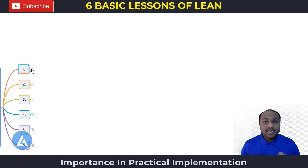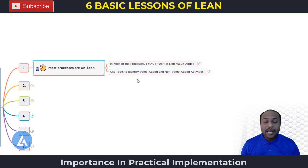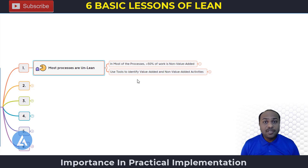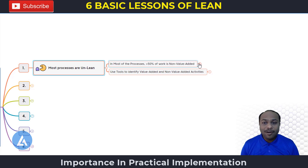The first lean lesson is: most processes are non-lean. What is the meaning of that? If we take any business operation or any process, we can say that most of the work from those business operations — more than 50% — is non-value added. What is meant by value added and non-value added?